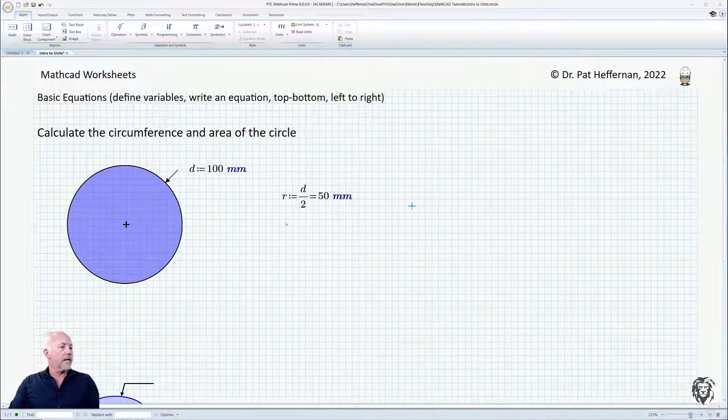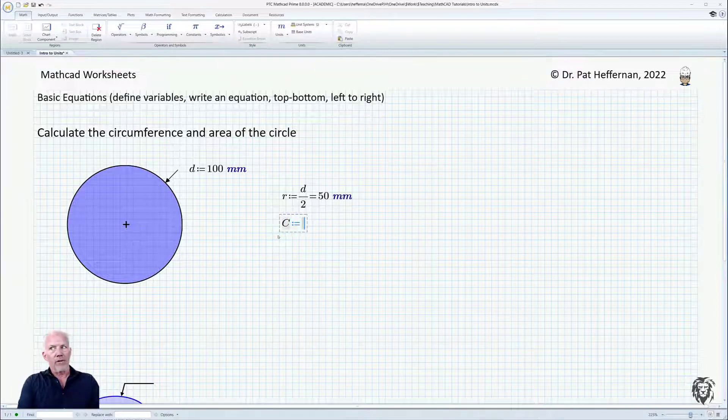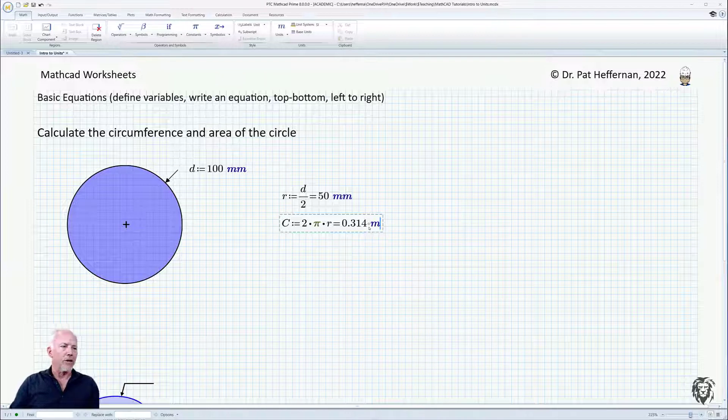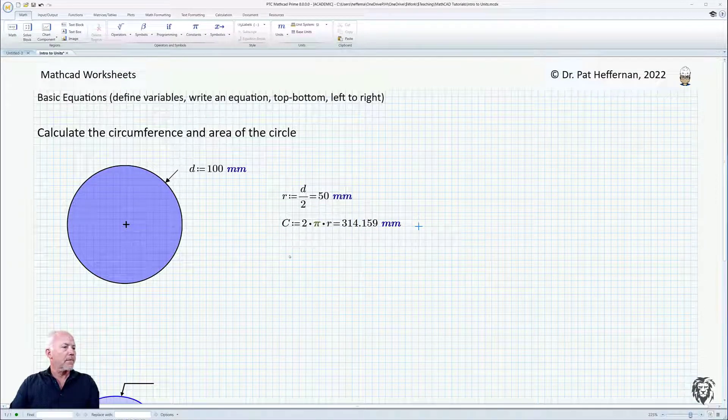And again, we calculated the circumference. So circumference is equal to 2 times pi times the radius equals. And again, because it recognizes this as a linear distance based on the formula that you put in, it's going to offer it up in meters, or we'll change it to millimeters, and we'll get a value in millimeters.